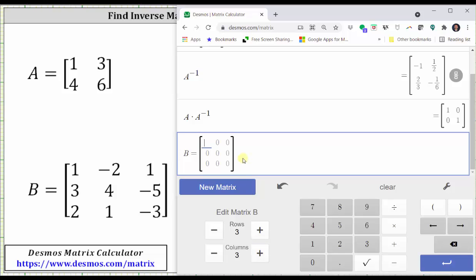Now we enter the elements of matrix B. Instead of using the Desmos keypad, you can use a computer keyboard and simply press tab to change positions in the matrix. For example, for the first row, press one tab, negative two tab, one tab, and so on. Enter.